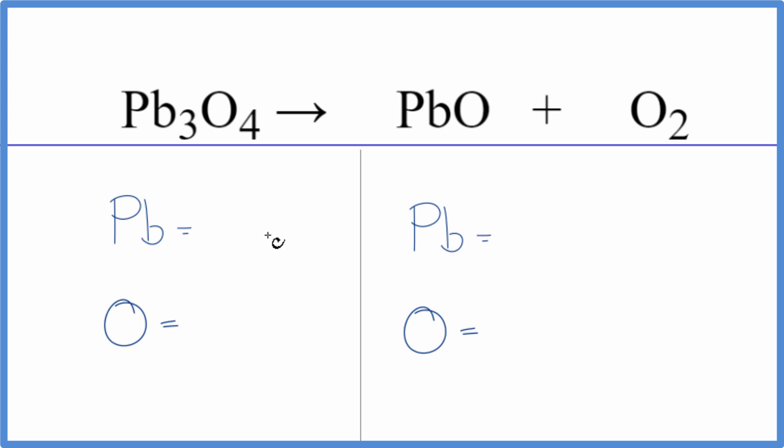So let's count the atoms up on each side. Three lead atoms, four oxygen. Product side, we have one lead and one oxygen. Plus, don't forget these two. People often forget those two. Makes it very difficult to balance.